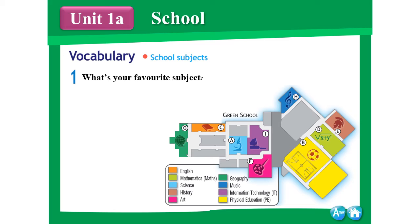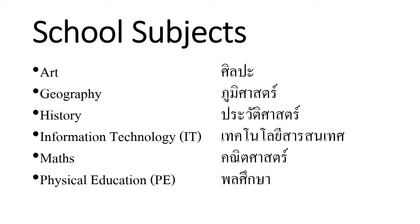Mathematics — Teacher Ulysses doesn't know about that in Thai, I think it's pronounced 'kanit'. Next: science, history, art, geography, music, information technology, and PE or physical education. Now let's go through the school subjects vocabulary.